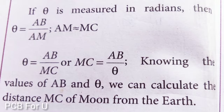So if theta is measured in radians, theta equals AB divided by AM. So AB equals AM times theta, and as well, AM is almost equal to MC.